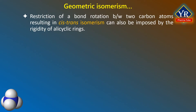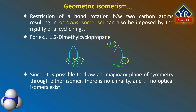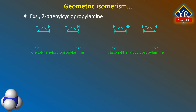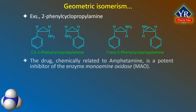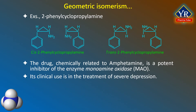Restriction of bond rotation resulting in cis-trans isomerism can also be imposed by the rigidity of alicyclic rings. Using 1,2-dimethylcyclopropane as an example, the cis isomer finds both methyl groups above or below the plane of the ring, while in the trans isomer they are situated one above and one below. Since it is possible to draw an imaginary plane of symmetry through either isomer, there is no chirality. A more interesting drug example is 2-phenylcyclopropylamine, chemically related to amphetamine, which is a potent inhibitor of monoamine oxidase (MAO) used clinically in the treatment of severe depression.